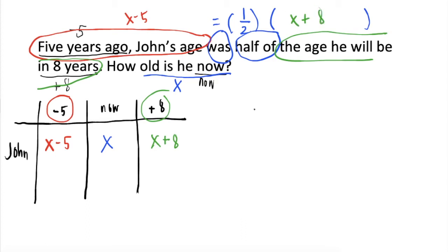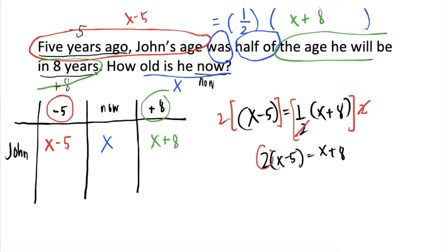So, isulat natin in equation form, we will have x minus five is equal to one half times x plus eight. Multiply both sides by two, we will get this. I-distribute natin ang two, we will have two x minus ten is equal to x plus eight. Let's combine like terms.